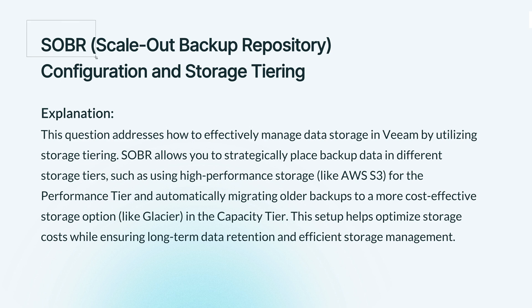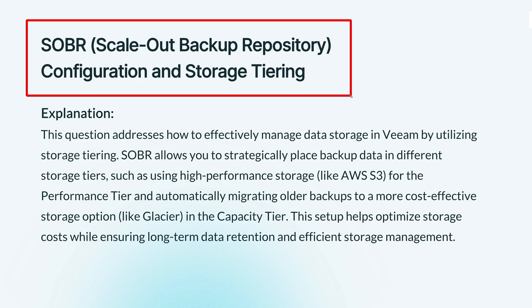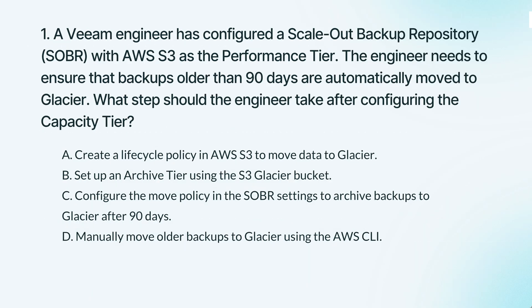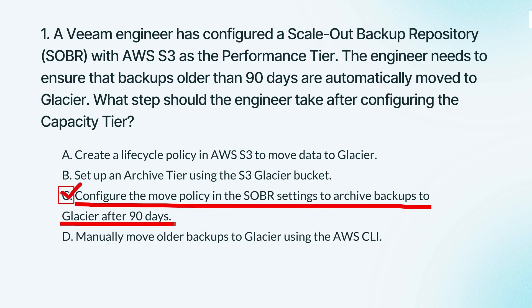The knowledge points of this question are SOBR configuration and storage tiering. This is about using Veeam storage tiering to manage backups efficiently. With SOBR, you can automatically move older backups from high-performance storage to more cost-effective storage, saving on storage costs while keeping your data safe and accessible. The correct answer is to set up a policy in Veeam that automatically moves backups older than 90 days to Glacier, so the system handles it for you without manual intervention.